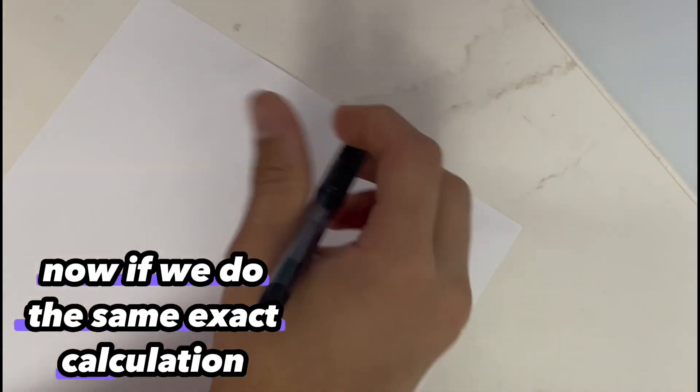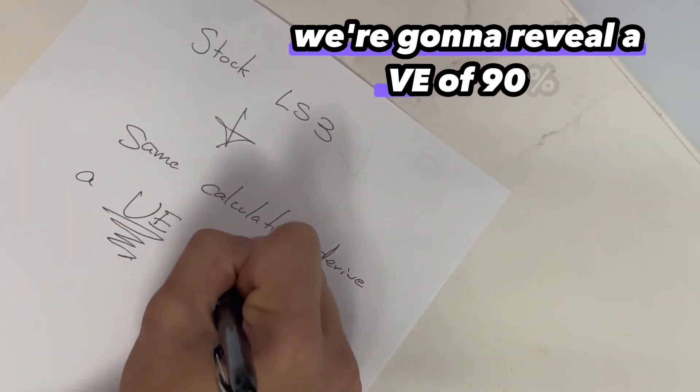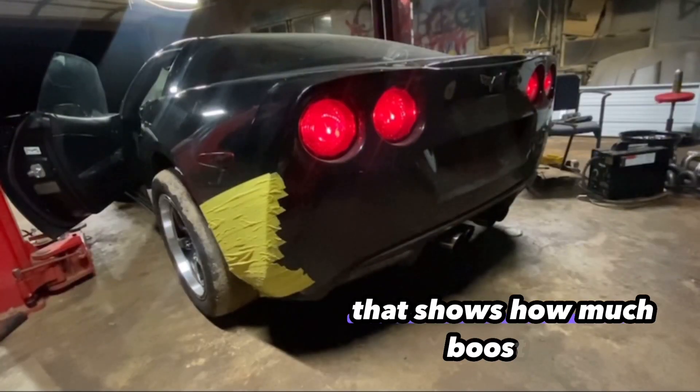Now, if we do the same exact calculation for a stock LS3, a Chevy motor, we're going to reveal a VE of 90%. And then this further implicates a calculation that shows how much boost or how much air would be pumped through the engine if you were to add 15 pounds of boost to a stock LS3 versus a Gen 3 Coyote.